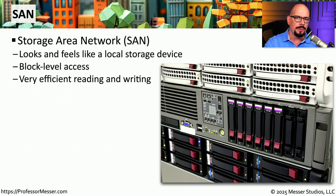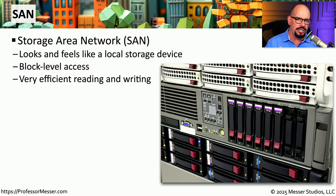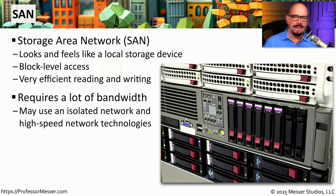Many organizations will have a repository of storage that they refer to as a SAN, or Storage Area Network. This is usually high-speed connectivity because we're often transferring large amounts of data into and out of that SAN. To the devices accessing the SAN, this looks and feels like a local storage device, so you can even take a very large file and change a very small bit of data very efficiently — we refer to this as block-level access. Because we're moving so much data in and out of the SAN, we usually put these on their own isolated network connected to the rest of the network over very high-speed connections.